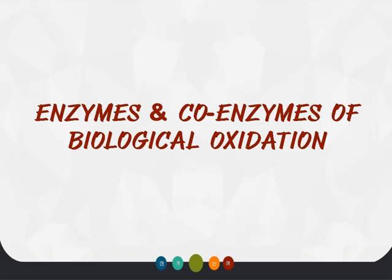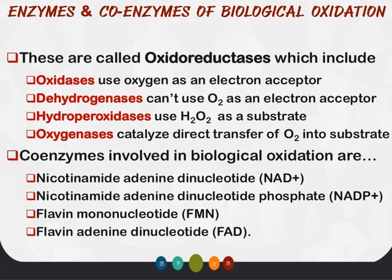It is important to know which enzymes and coenzymes are involved in biological oxidation. The enzymes involved are collectively known as oxidoreductases, and under this umbrella there are four groups: oxidases, dehydrogenases, hydroperoxidases, and oxygenases. At the same time, we have four coenzymes: NAD+, NADP+, FMN, and FAD.